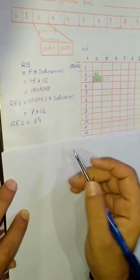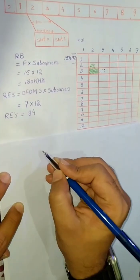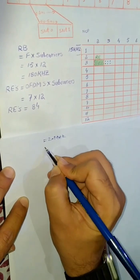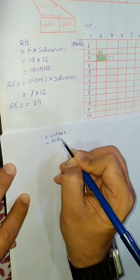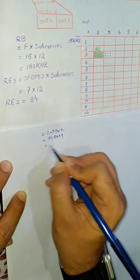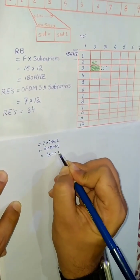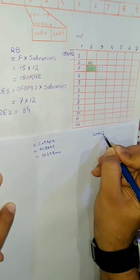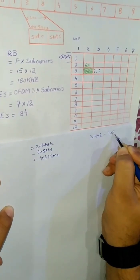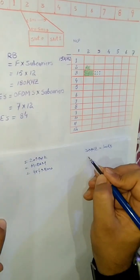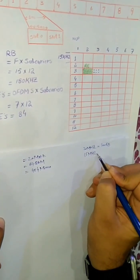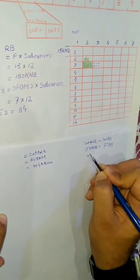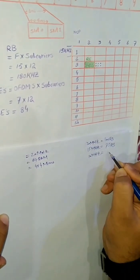Now that we have a basic LTE frame structure understanding, we can calculate 4G throughput. Let's consider we have a 20 MHz bandwidth with 64QAM modulation scheme operating on 4x4 MIMO. In 20 MHz we have 100 RBs, in 15 MHz we have 75 RBs, in 10 MHz we have 50 RBs.